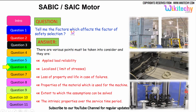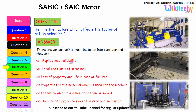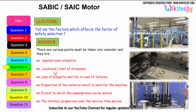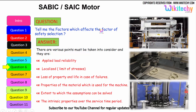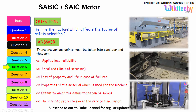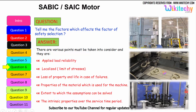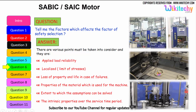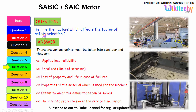Now let us see the factors which affect the factor of safety selection. These include: applied load reliability; limit of stress as thus localized; loss of property and life in case of failures — this is a very important factor. Also, the properties of the material used for the machine; the extent to which assumptions can be resolved regarding compression or extension; and the intrinsic properties over the service time period.